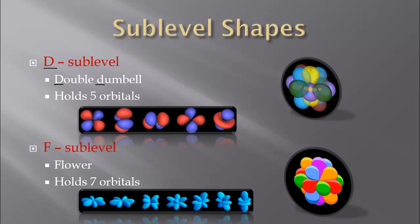Then we have the F sublevel. I like to call it flower, because it looks more like a flower and it starts with F. So, F sublevel — flower shape — and it holds seven orbitals. You can see the different shapes: one for the X, Y, Z axis and then different orientations around that. As a cluster, it would look like this around the nucleus.